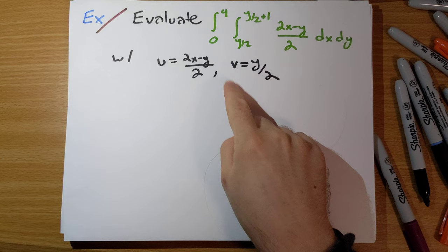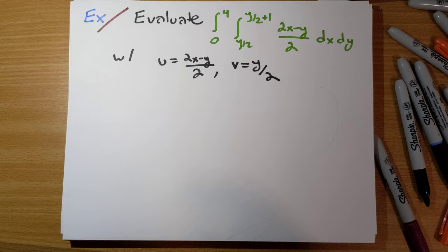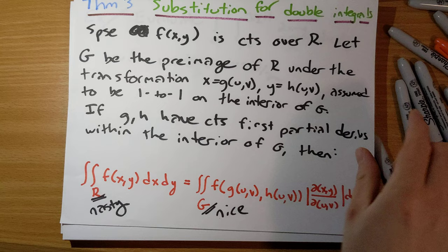We want to use our change of variables. Here we're given u and v in terms of x and y. Our first thing to do is to figure out what are x and y in terms of u and v. Figure out what little g of u, v, little h of u, v are going to be.